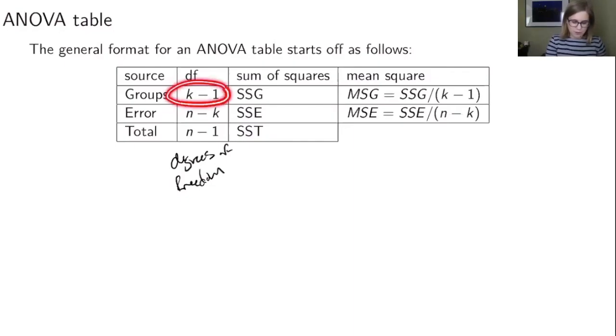So the degrees of freedom for the groups are going to be k minus 1, that's the number of groups minus 1. The total degrees of freedom are going to be n minus 1. And then because everything in the ANOVA table needs to add up, the degrees of freedom for the error are going to be n minus k.